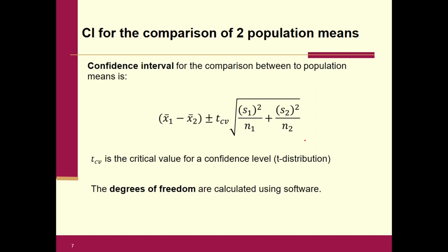We're not going to have you calculate the actual degrees of freedom. Instead, we're going to use software to help us past that point, which simplifies things quite a bit. If WebAssign asks you to calculate the point estimate or the standard error, you'll need to do those. But for the entire confidence interval, we'll allow the software output to help us because of those ugly degrees of freedom.